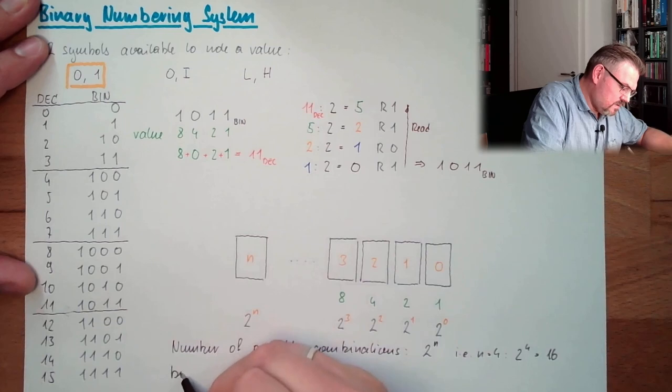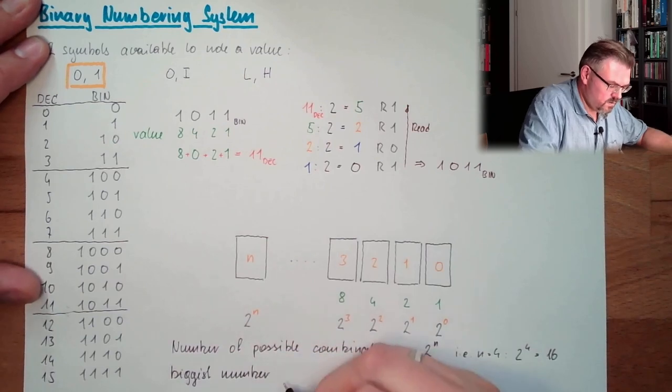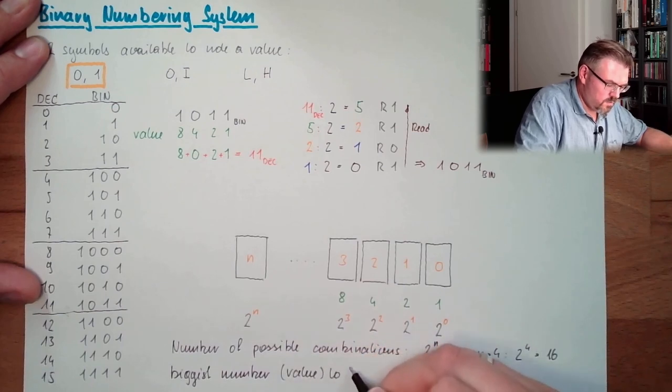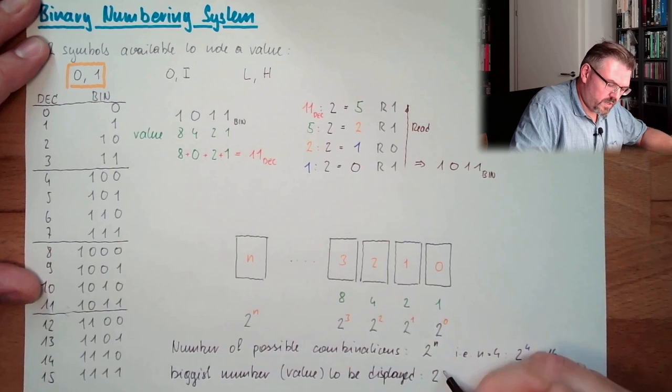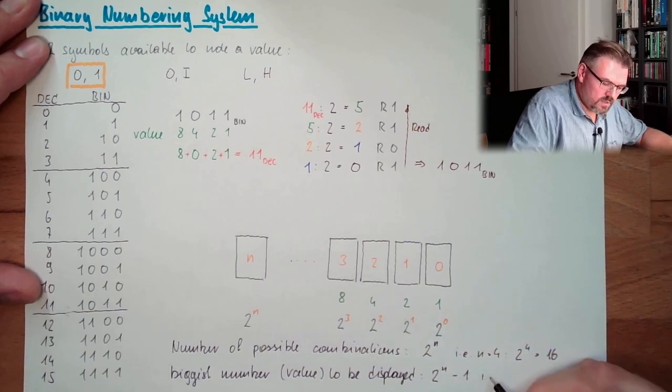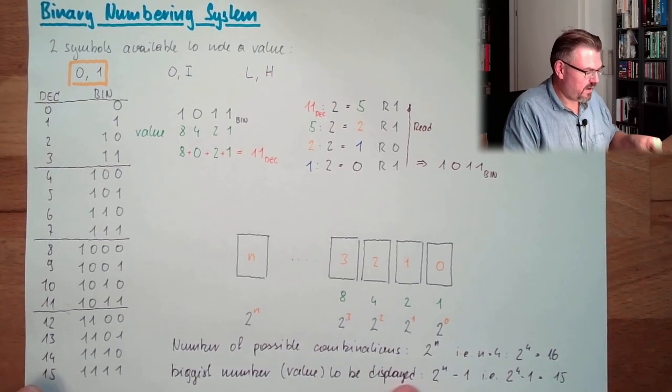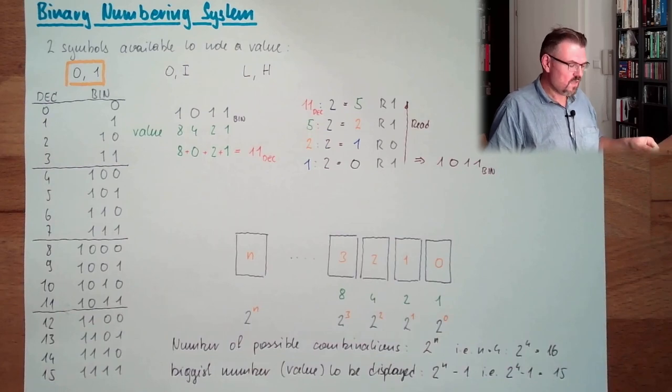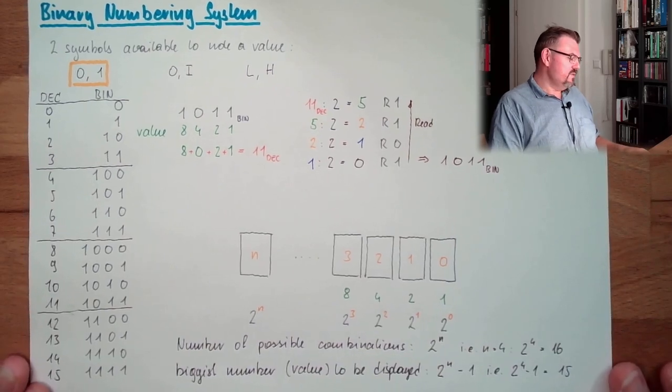And the biggest number or value to be displayed: 2 raised by the power of n minus 1. In example, 2 raised by 4 minus 1 is 15. And really, 15 was the biggest number I could display with 4 different digits in the binary system. If I have a fifth, it would then be twice as much minus 1, so it's 16, 32, 31 would then be the next. This is how the binary system is working.